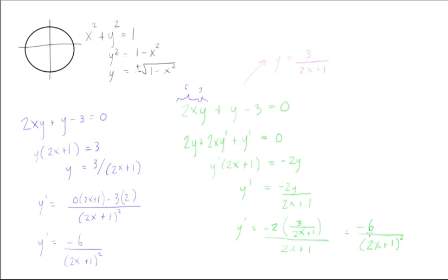And so if you look at this, now we're getting the same thing. Y prime is equal to negative 6 over 2x plus 1 squared. And y prime is equal to negative 6 over 2x plus 1 squared.